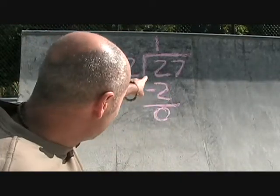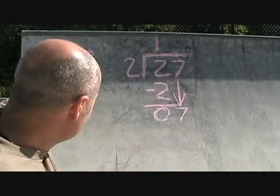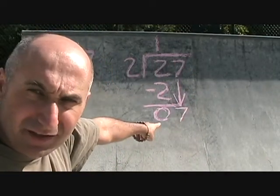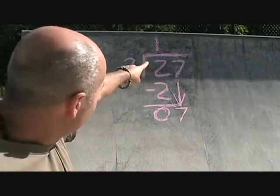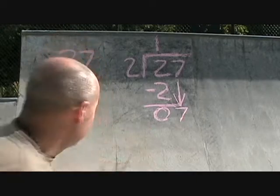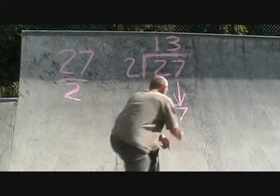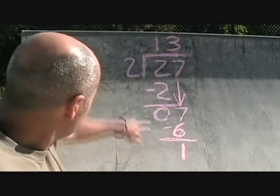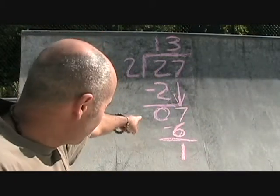What we're going to do now is bring the 7 down. So how many times does 2 go into 7? Well, that's going to go 3 times. So you're going to put the 3 up top there, and you're going to multiply it out and put the result down here. So 3 times 2 is going to be 6. So 3 times 2 is going to be 6, and you're going to put the minus sign there because you're subtracting.